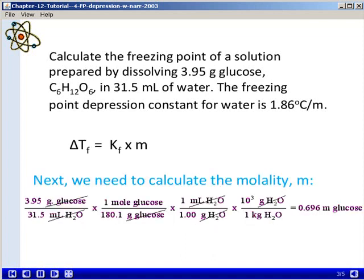So we first need to calculate the molality of the solution. We have 3.95 grams of glucose in 31.5 milliliters of water. So we will first convert grams of glucose to moles of glucose using the molar mass of glucose, 180.1 grams, to convert from grams to moles. This gives us moles of solute.